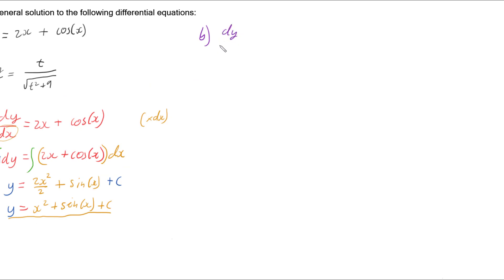Part b we have dy/dt equals t over the square root of t squared plus 9. And so we can turn this into dy equals t over the square root of t squared plus 9 dt, and integrate both sides.